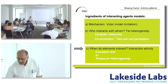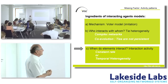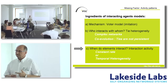Those are the ingredients of interacting agent models: first the mechanism — I'll focus on pure imitation — and then the interaction structure, the heterogeneity in type. There are two things: the network might be complex, and second, the ties may not be persistent. If the ties are not persistent, you have some co-evolution.